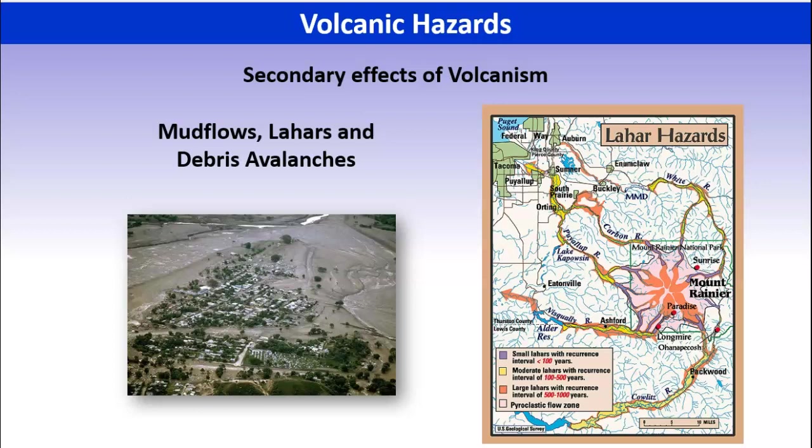Heavy rains can induce a lahar, or a small eruption can melt a glacier or snow on the top of a mountain. Because these are tall structures, sometimes they have snow on the top. All that water mixes with the loose ash and debris and then moves downhill. Now we have a mud flow — or in this case, because it's associated with a volcano, a lahar. It travels downslope very quickly because it's steep.